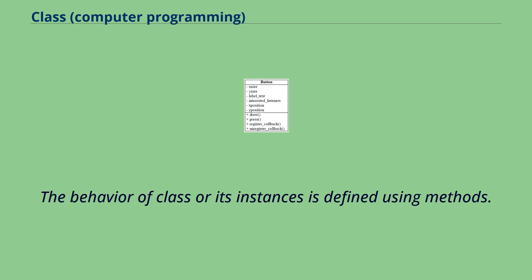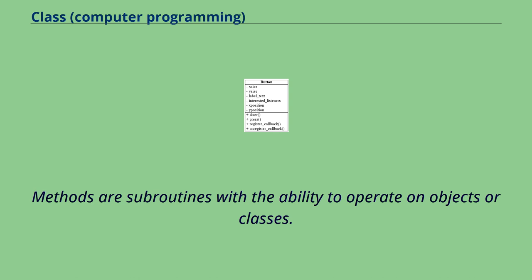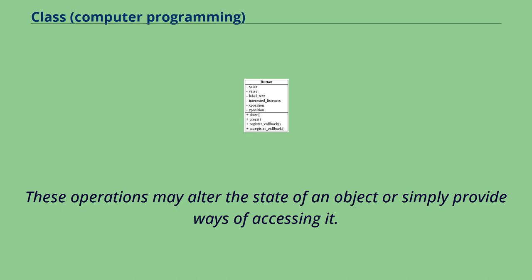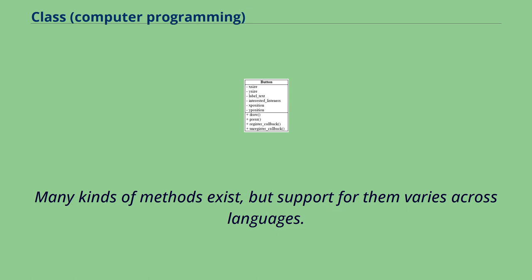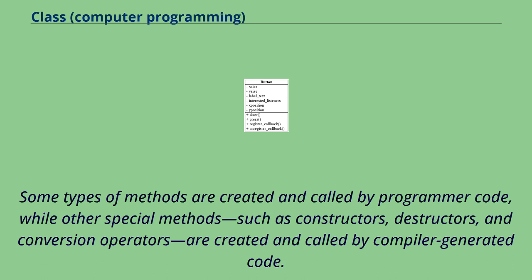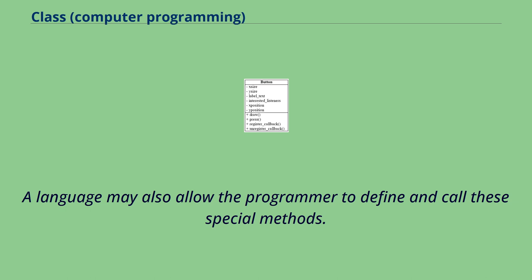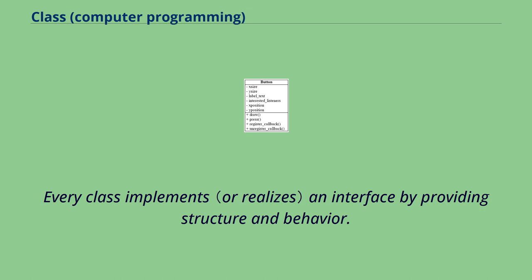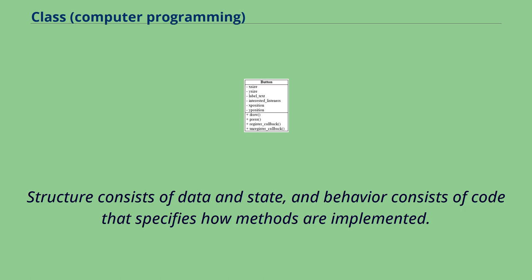The behavior of a class or its instances is defined using methods. Methods are subroutines with the ability to operate on objects or classes. These operations may alter the state of an object or simply provide ways of accessing it. Many kinds of methods exist, but support for them varies across languages. Some types of methods are created and called by programmer code, while other special methods such as constructors, destructors, and conversion operators are created and called by compiler-generated code. Every class implements an interface by providing structure and behavior. Structure consists of data and state, and behavior consists of code that specifies how methods are implemented.